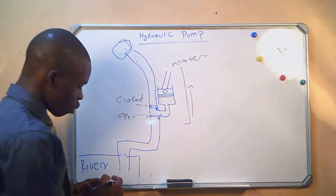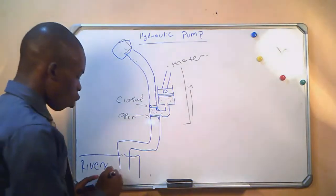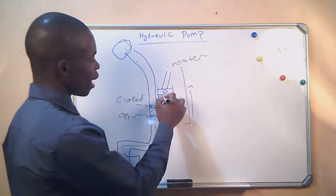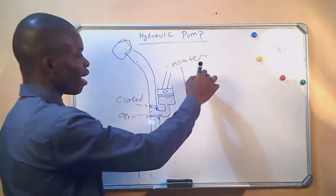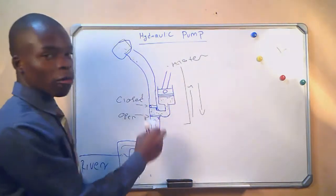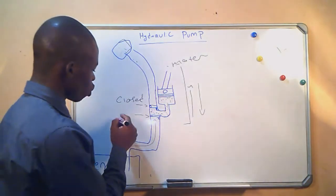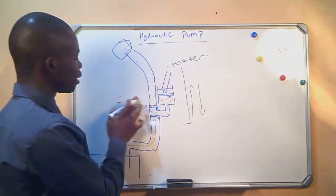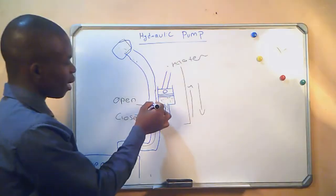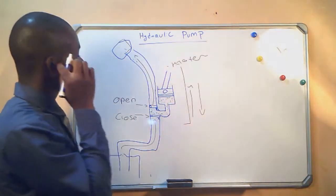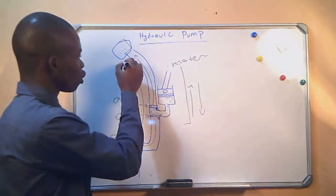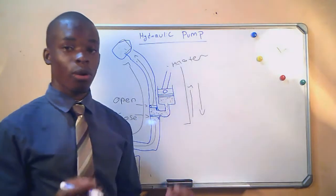Because of the vacuum, water will be sucked into the system from the river and it will occupy this space. As the piston moves down, the pressure of the water will force this valve to close and this valve will open, and the water will escape in that direction. So the direction of the water will be from the river to the destination where we want to deliver the water to.